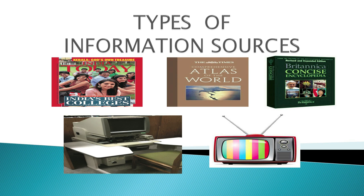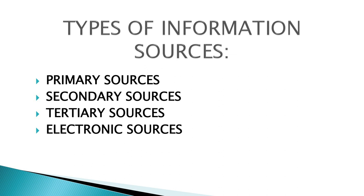Broadly, there are four types of information sources, which we mentioned in the last program. They are Primary Sources, Secondary Sources, Tertiary Sources, and Electronic Sources. First of all, we shall discuss primary sources of information.